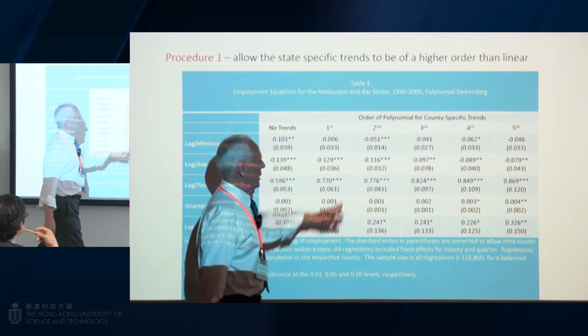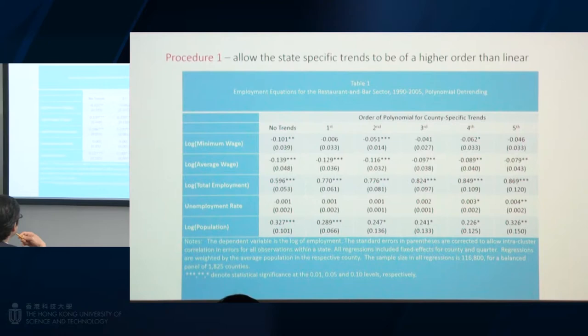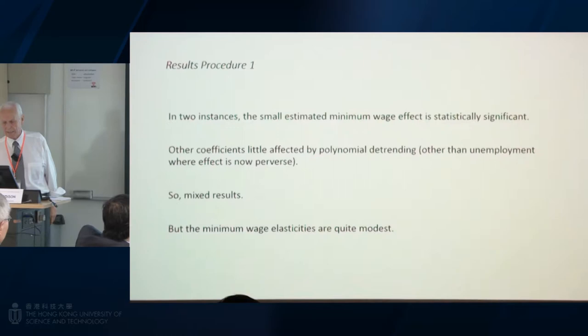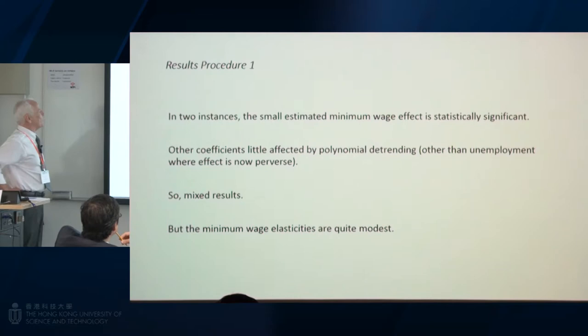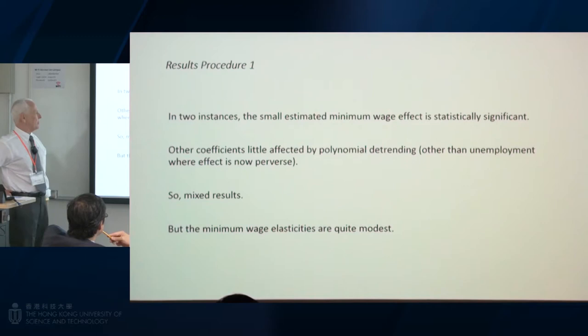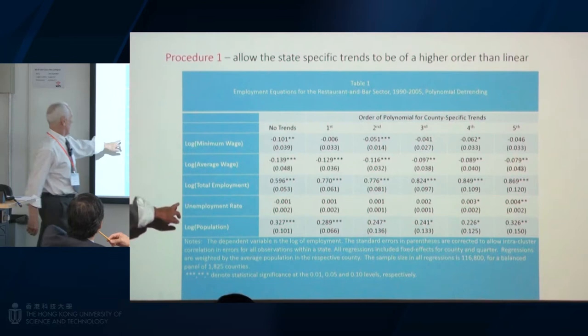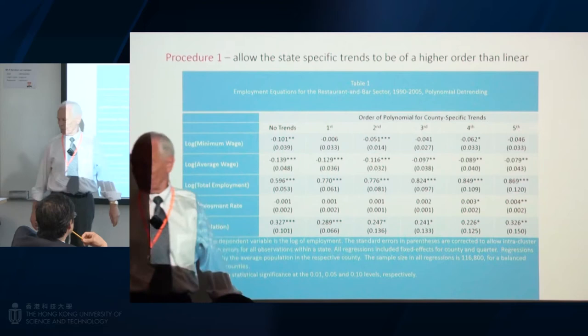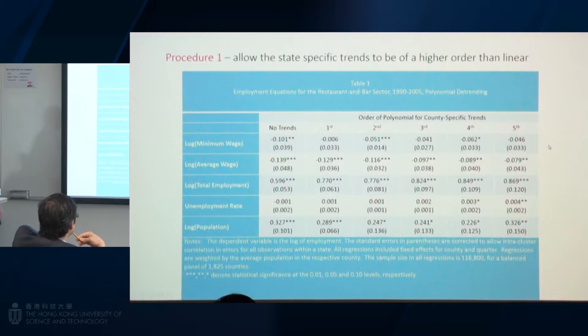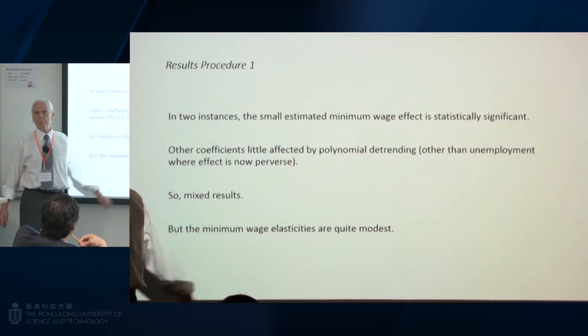Although if you look at those, this is highly significant and this is only marginally significant. But this is what we were warned about. Summarizing, in these two instances we have estimated minimum wage effects that are significant. The other coefficients are little affected by polynomial detrending, other than this effect on unemployment which changes to positive and significant — which is perverse. But let's just say these are decidedly mixed results. The main point is that the minimum wage elasticities are modest.